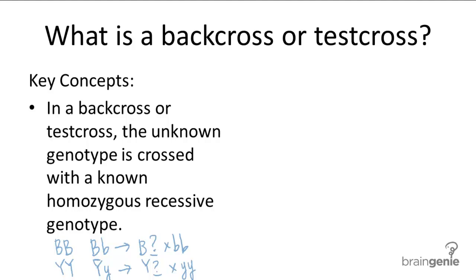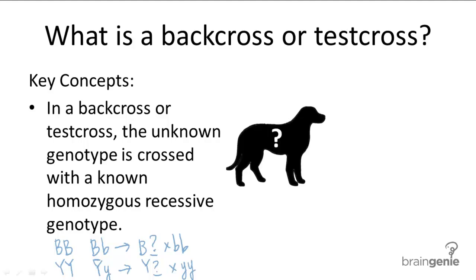Here's another example that's more detailed using dog fur. A dog breeder wants to know whether his black dog has homozygous black fur (big B, big B) or heterozygous black fur (big B, little b), and so he crosses it with a homozygous brown fur dog.